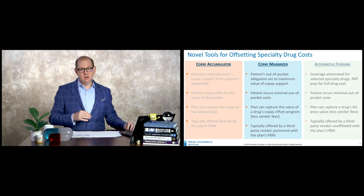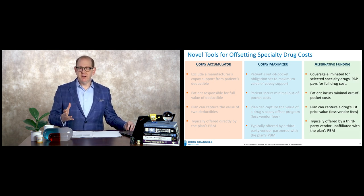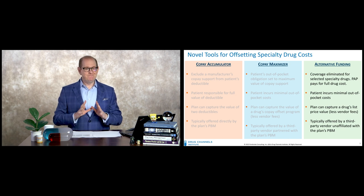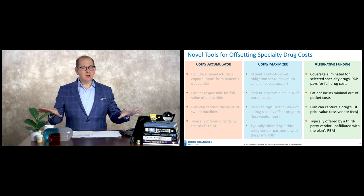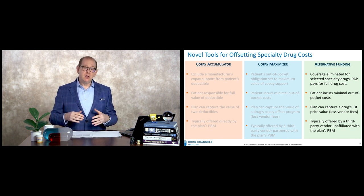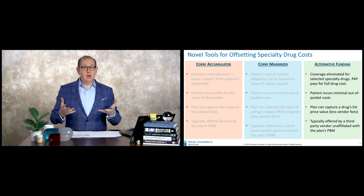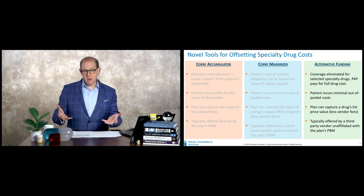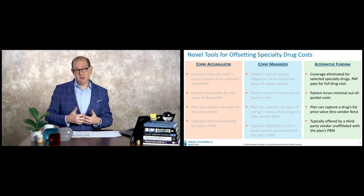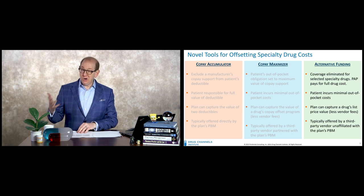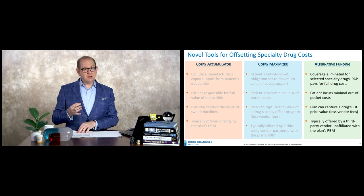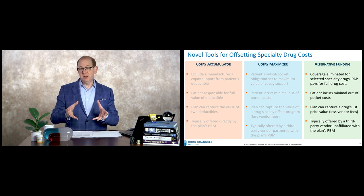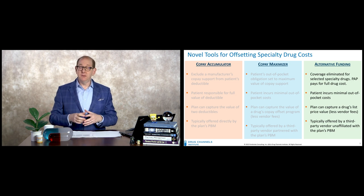The newest and most controversial one goes by a few different names, sometimes called a specialty carve-out, but I think that gets confusing, so I'm going to use the term alternative funding programs. The concept is essentially to eliminate coverage for specialty drugs or drugs above a certain cost threshold. The patients are then uninsured for that drug, and the entire cost of the drug will be paid for by the patient assistance program. The patient incurs minimal out-of-pocket costs. The plan gets the full value of that offset from their plan costs minus vendor fees, which are surprisingly hefty. The vendors doing this are typically not affiliated with the PBMs — they're separate entities that essentially get this piece of specialty coverage carved out.